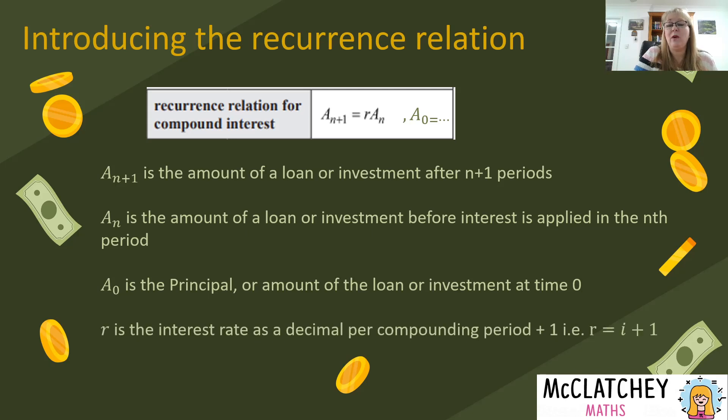Now you might be thinking well r we haven't seen the variable r before. We've been using i for interest. Well r is an interest rate as a decimal per compounding period plus 1. That is r equals i plus 1 because you remember from our previous video i is the interest rate as a decimal. So we've got to change it from percentage to decimal by dividing by 100 and then we have to divide by the amount of times it's compounded within a year. So if it's monthly, it's given to us as an annual rate compounded monthly we've got to divide it by 12. That gives us our value for i and then we add 1 to it.